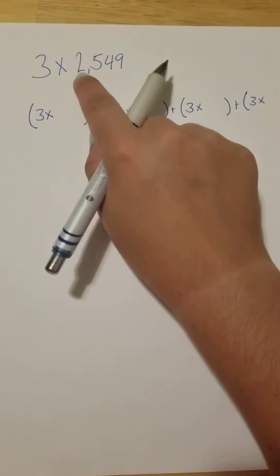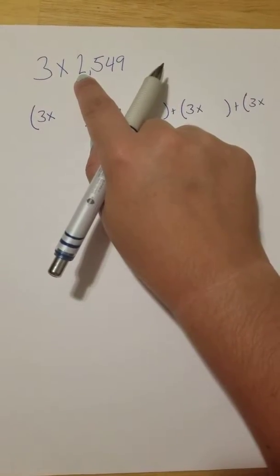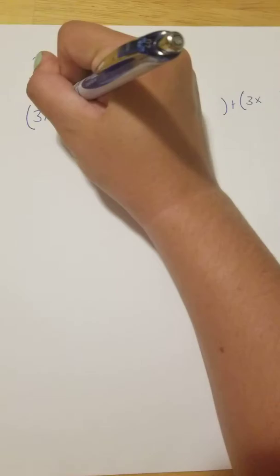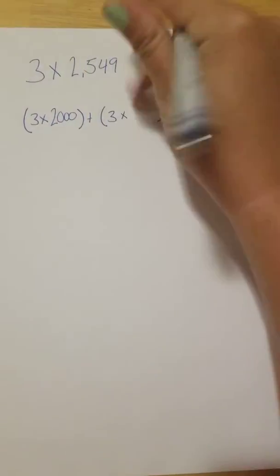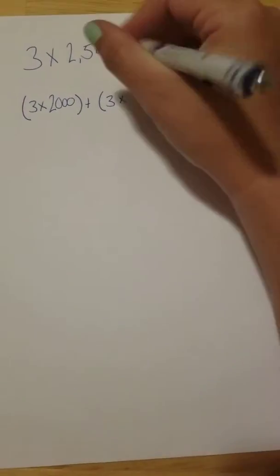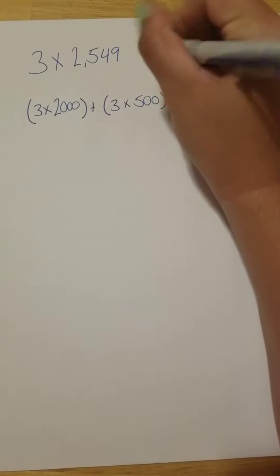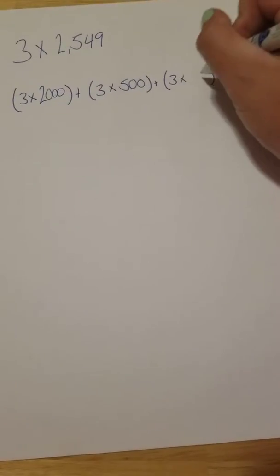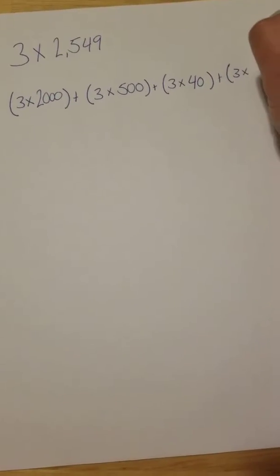I'm going to break it up into place value. This is the digit 2, but it's in the thousands place. So 3 times 2,000. The 5 is in the hundreds place, 500. The 4 is in the tens place, so 40. And the 9 is in the ones.